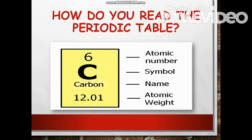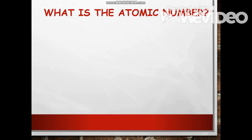So how do you read the periodic table? The number shown in the box is what we call the atomic number, and the letter in that box is what we call the chemical symbol of an element. It is easier for us to know the symbols of the elements rather than their real names. Below the letter is the name of the element — for example, Carbon — and the number below that is what we call the atomic weight.